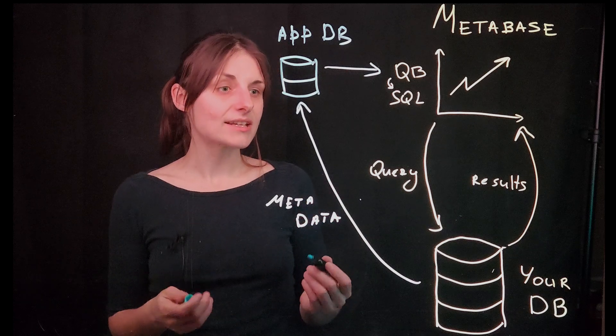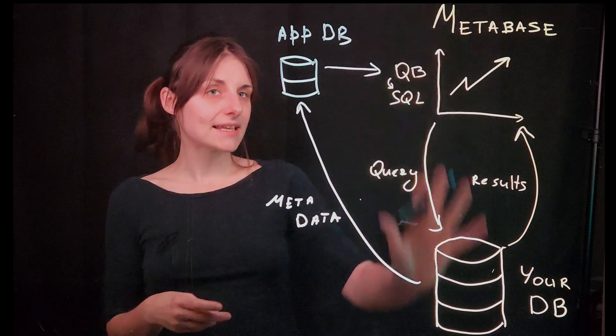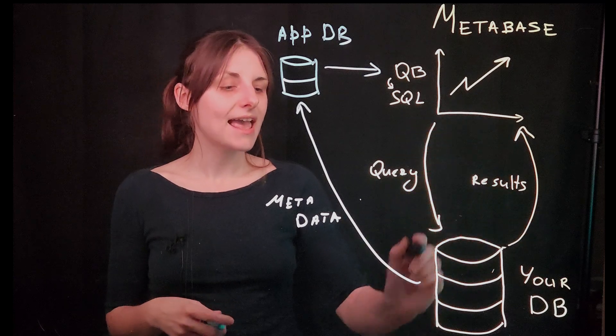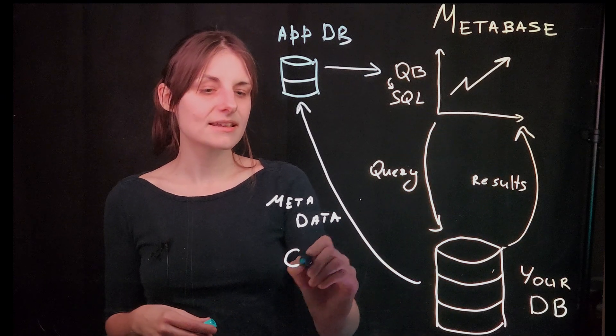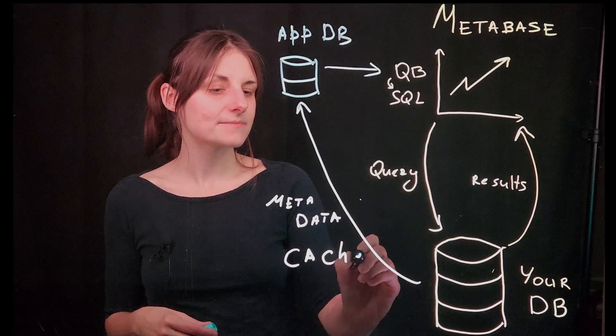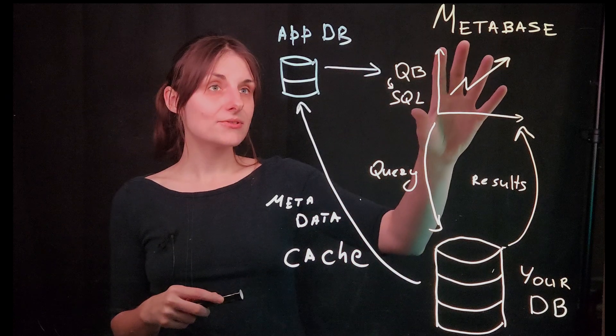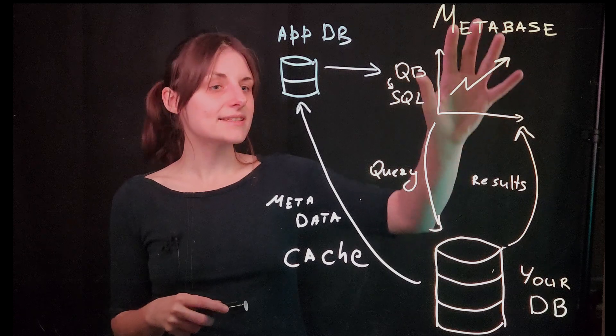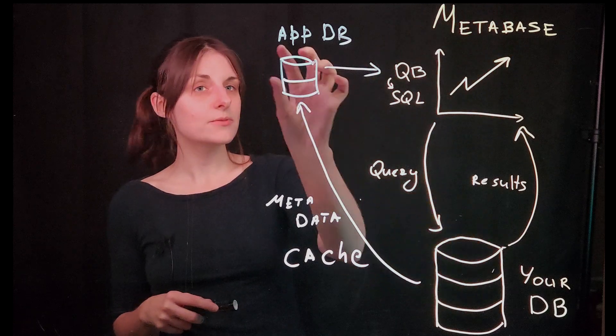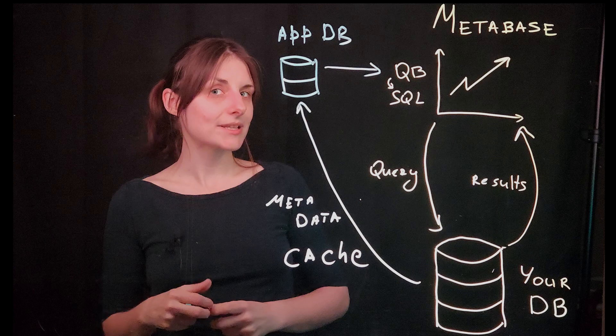So if you enable caching, then Metabase will send the query, execute it, and then store the results in the Application Database. That means when someone executes the cached query, instead of executing in a database, it will just pull the results from the Application Database.